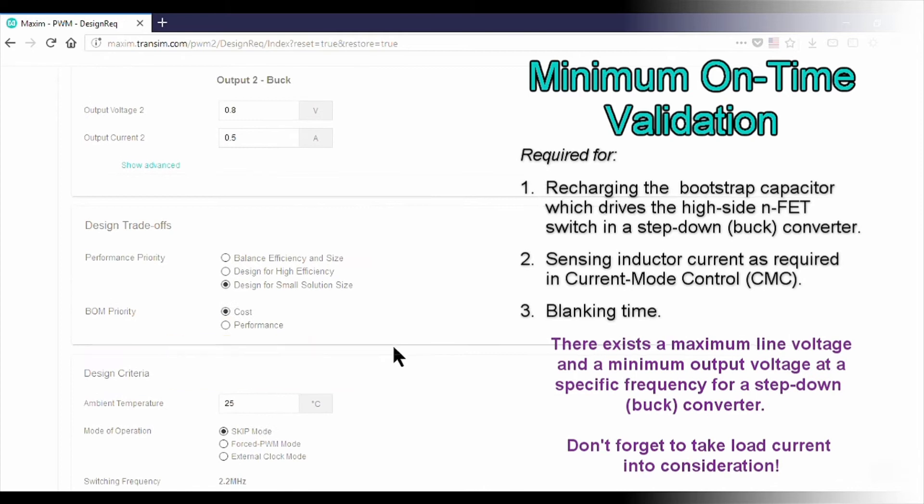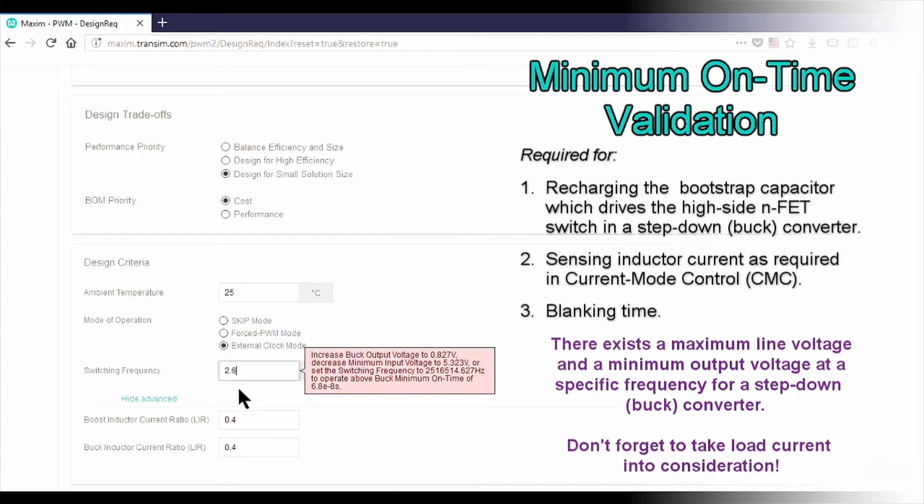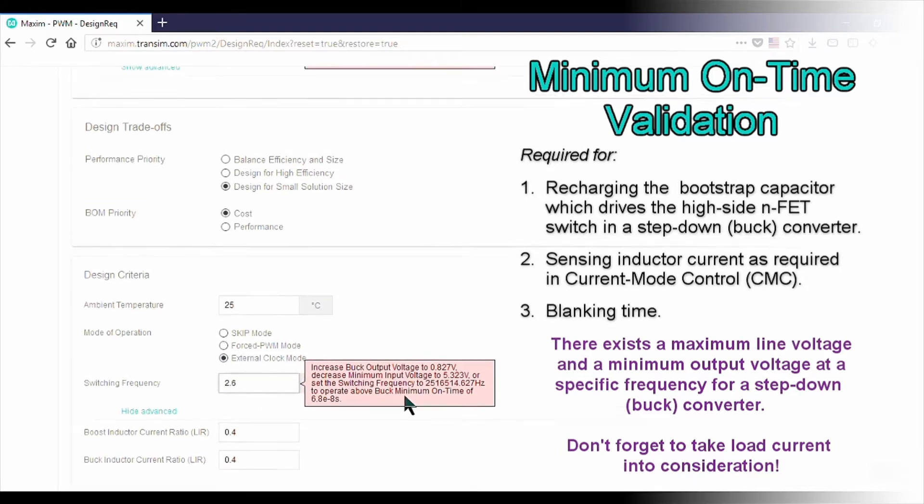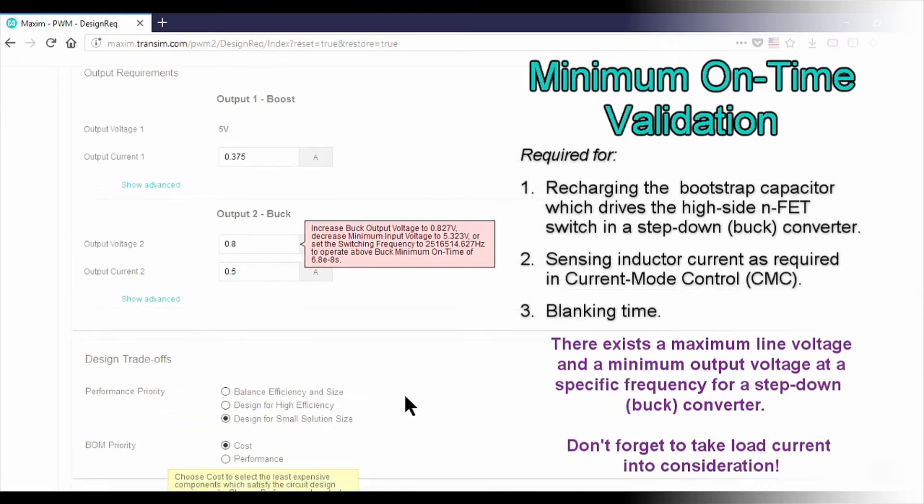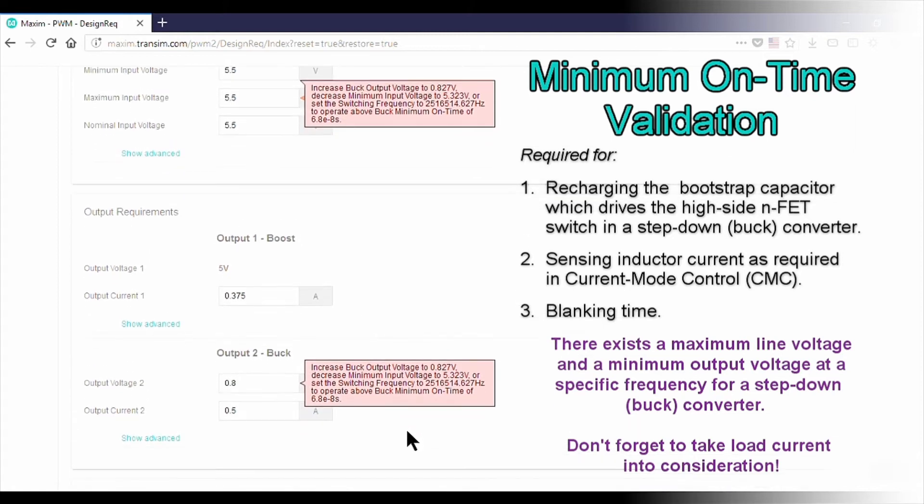This means that the buck converter is constrained to a maximum line voltage and a minimum output voltage for a specific switching frequency. If your application requires a duty cycle that is smaller than the minimum set by the converter's minimum on time, that converter may not provide the regulated output voltage required by your application.